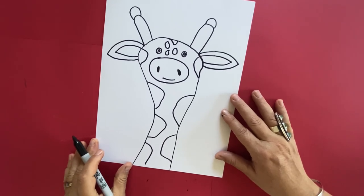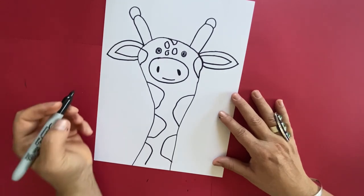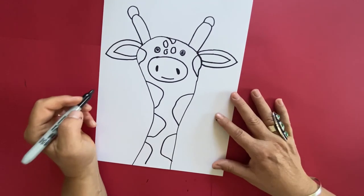Do it for the other ear remember to make it symmetrical whatever you do on one side do the same on the other. Ta-da now it's time to add the color the best part so get your color crayons out and we are going to color our giraffe.